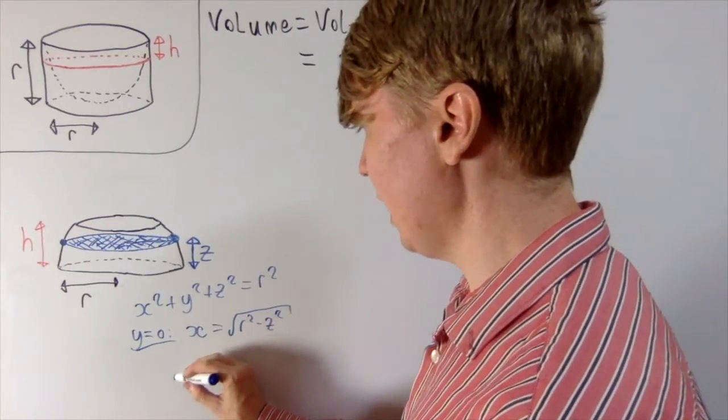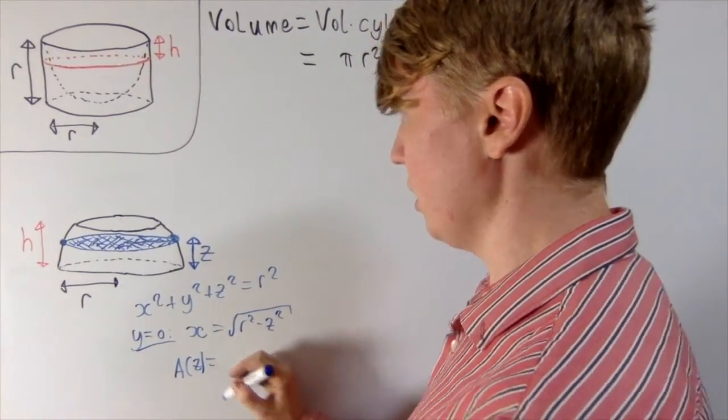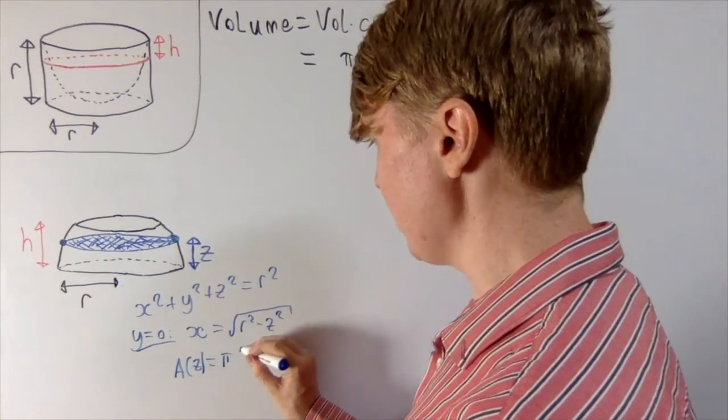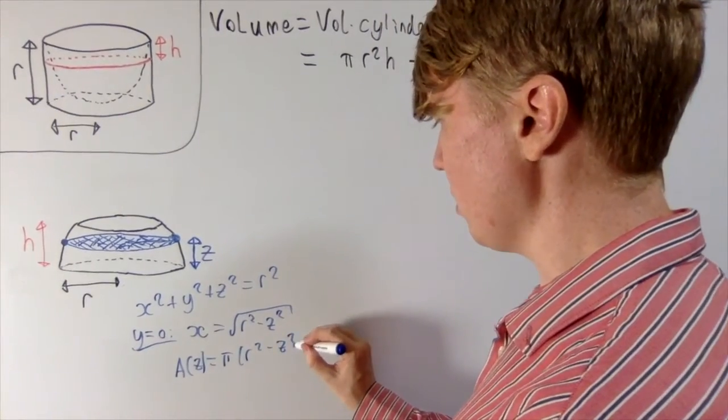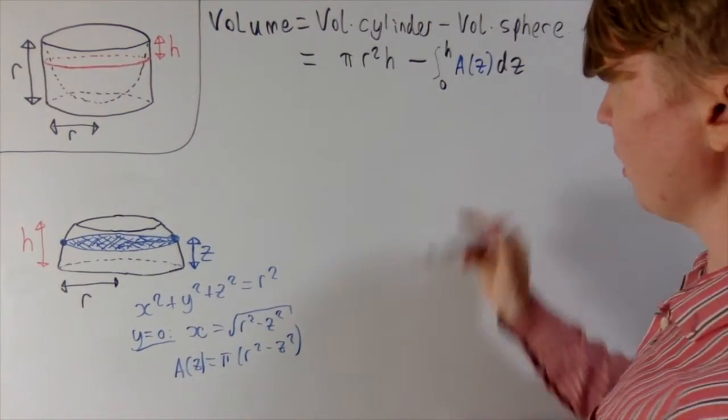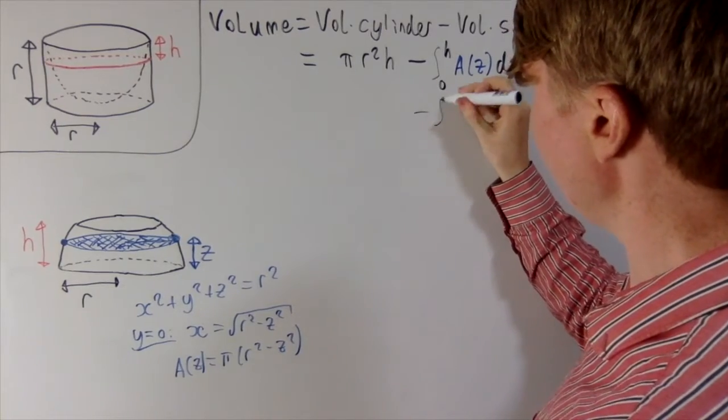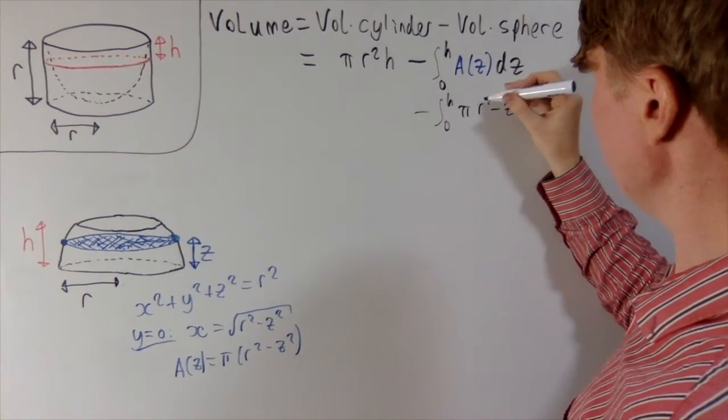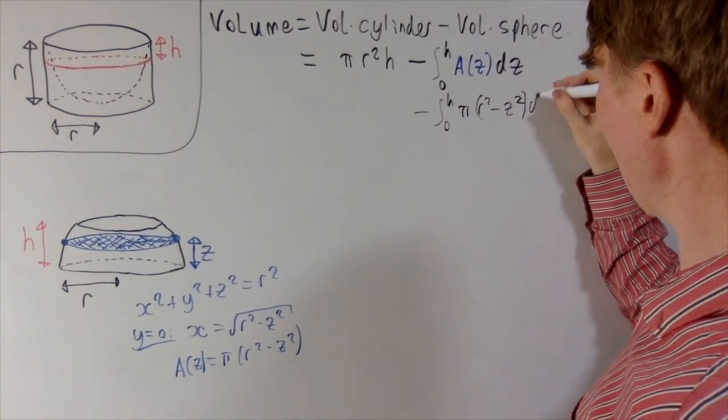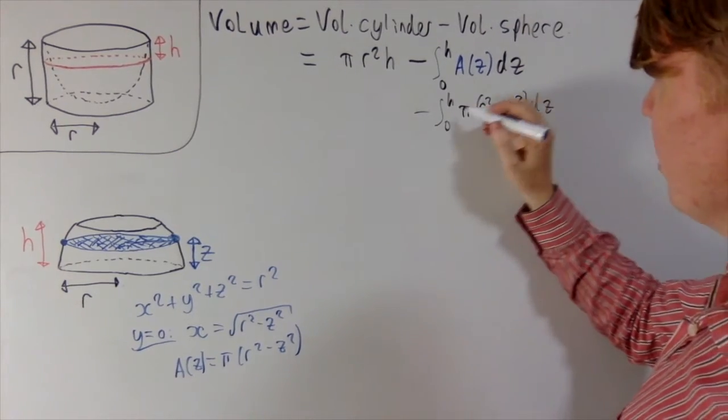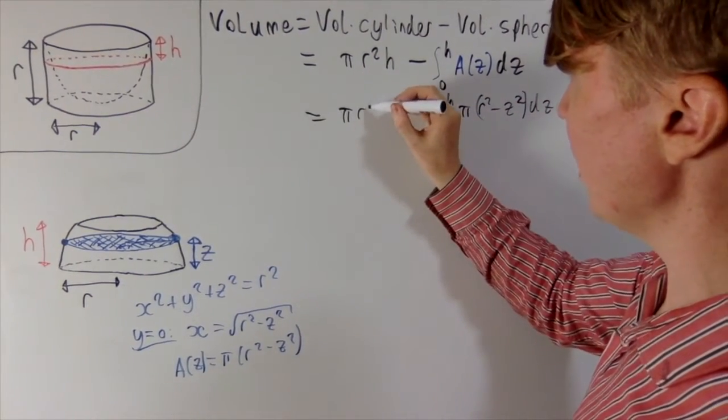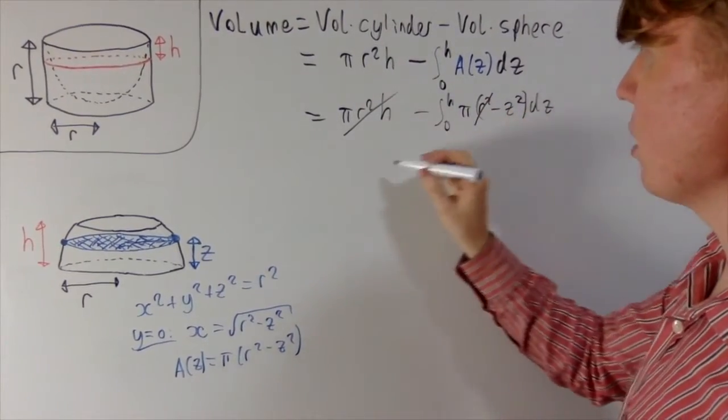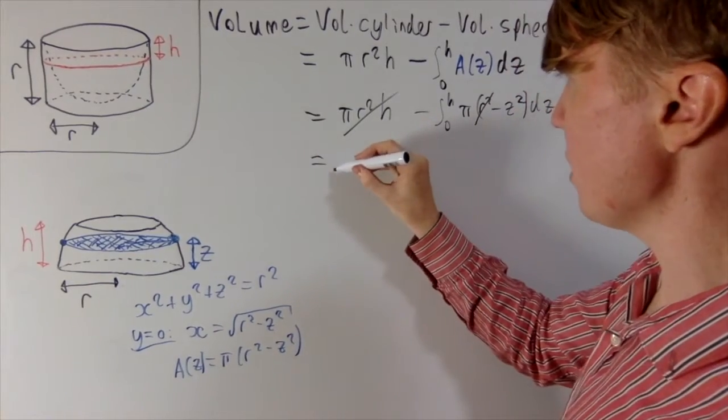So then A of Z, this cross-sectional area at height Z, this is just pi times X squared, which is pi into R squared minus Z squared. Great, so then we can substitute that in here, integral minus pi R squared minus Z squared DZ. And because we've got this pi R squared term here, we're integrating this over an interval of length H, this just gives us pi R squared H. So these two terms cancel, leaving us with a really simple integral to calculate, integral between zero and H of pi Z squared DZ.